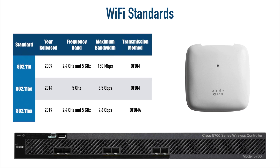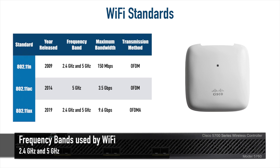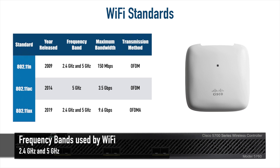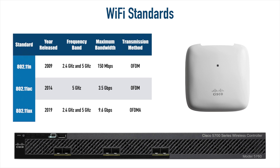The first thing to understand is that when we're communicating on a wireless network, we're using one of two frequency bands: the 2.4 GHz frequency band or the 5 GHz frequency band. 802.11n could use either one or both. 802.11ac can use just the 5 GHz band, and the brand new 802.11ax, also known as Wi-Fi 6, can use either band as well.